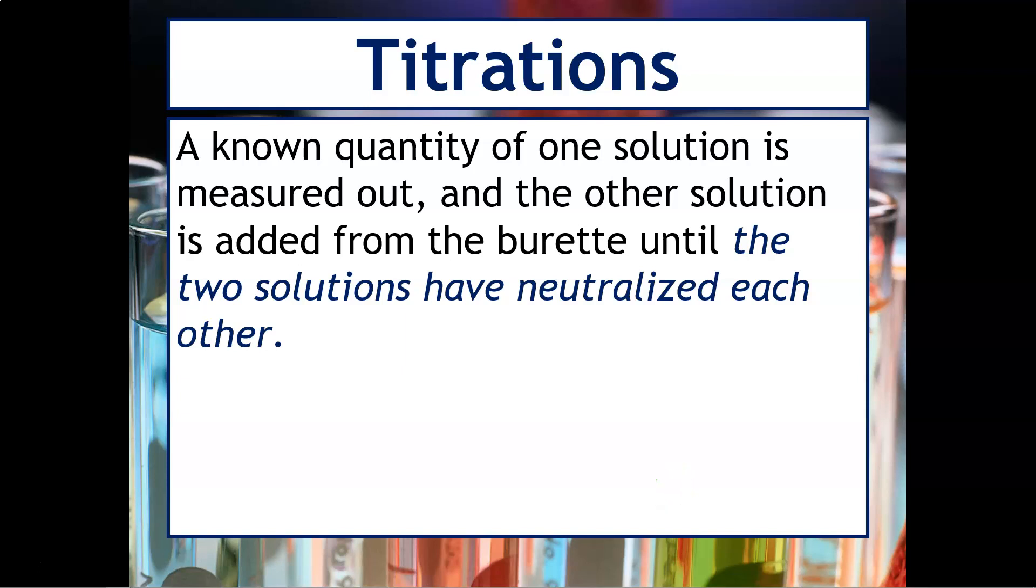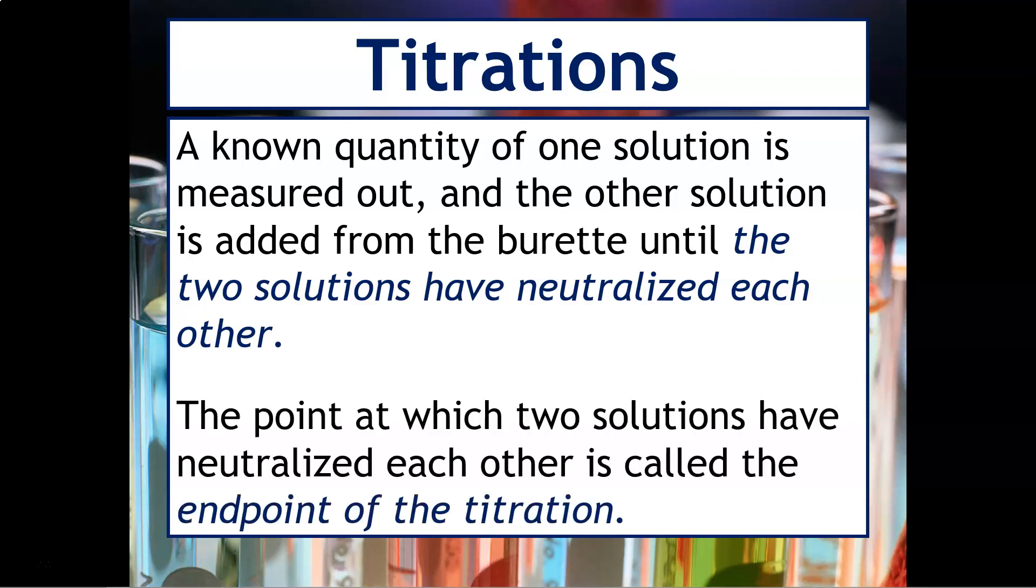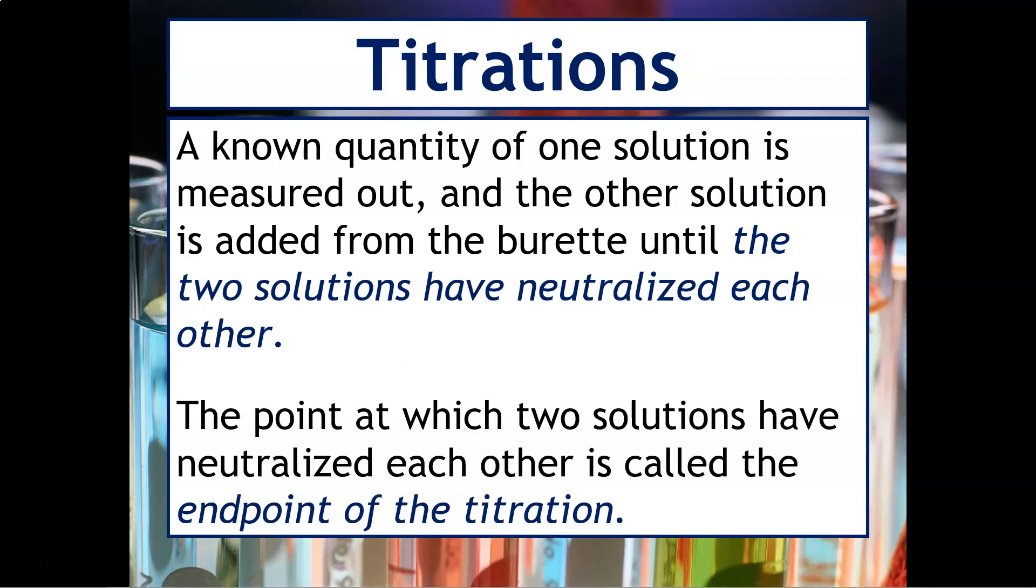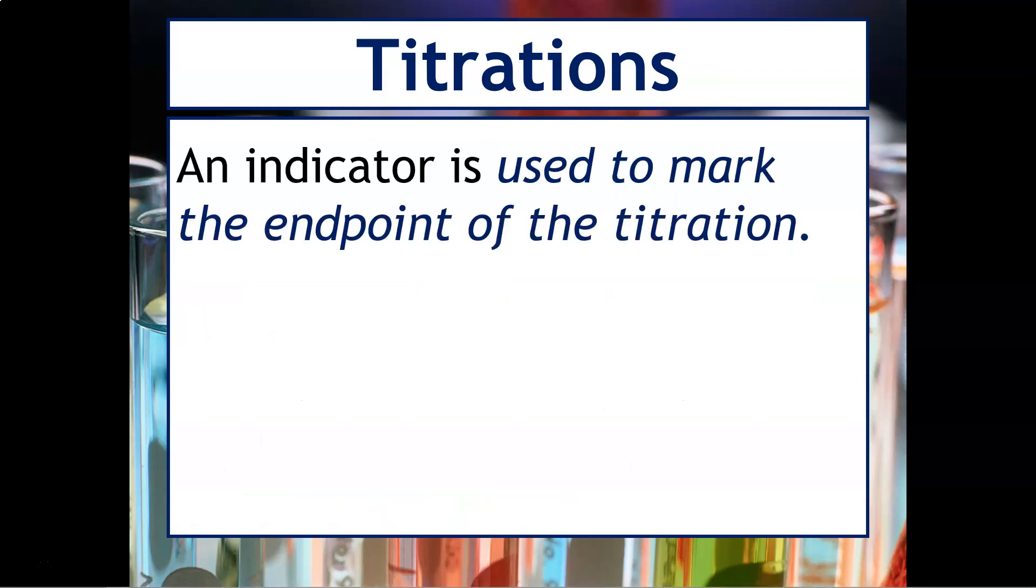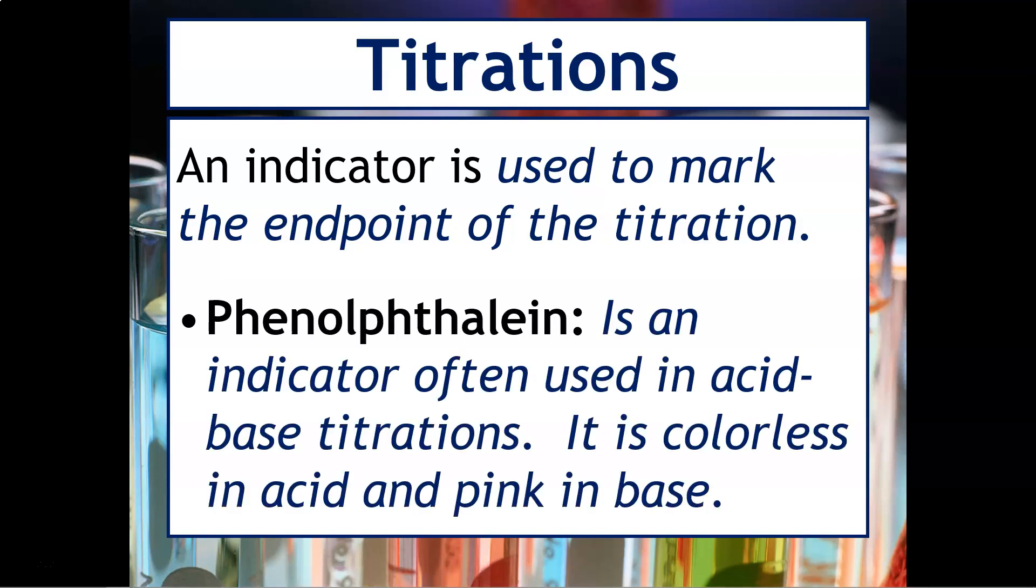Basically, that means that the moles of hydrogen ions equals the moles of hydroxide ions, at which point, the two solutions have neutralized each other, that is usually called the end point of the titration, or sometimes it could also be called the neutralization point. An indicator is often used to mark the end point of the titration. Phenolphthalein is a very common indicator that's used in acid-base titrations. It is colorless in acid and pink in base.